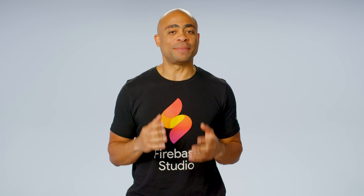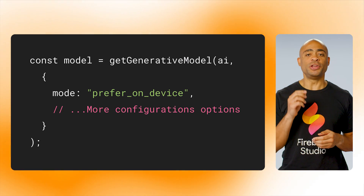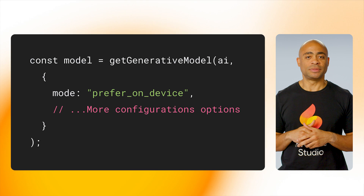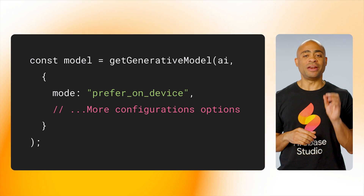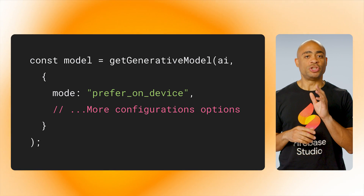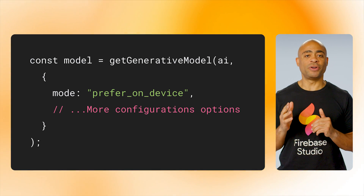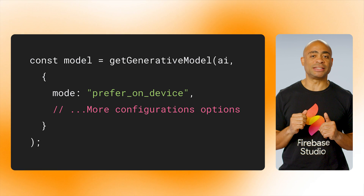Say you have a restaurant review app and you want to help your users provide better reviews. You want to add a feature that automatically generates a star rating and extracts the main highlights and lowlights from a user's review. You can use the hybrid capability to do the inference here — just use the mode that prefers the on-device model.